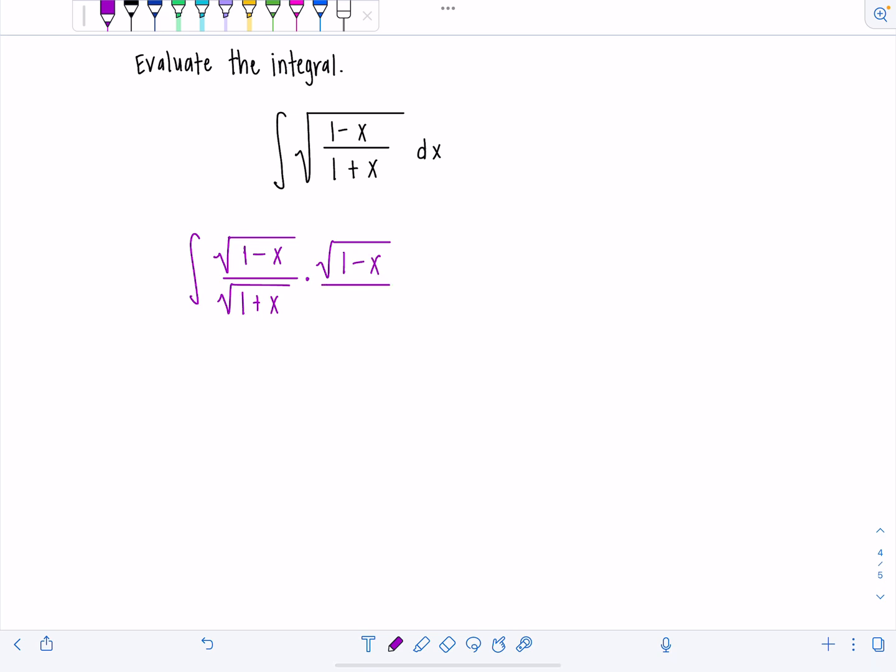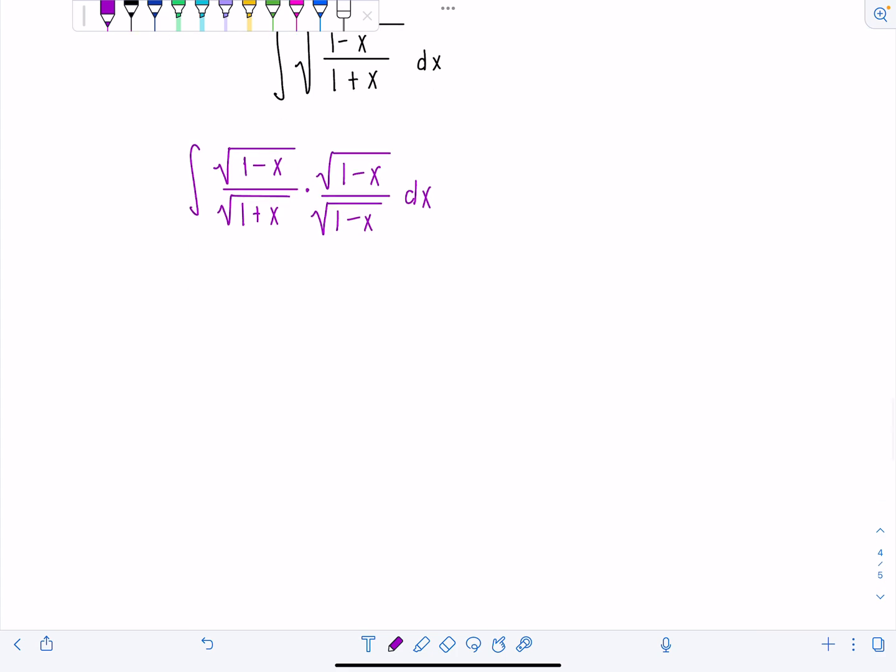Initially, I did try rationalizing the denominator, but it didn't get me anywhere. So here we go. You'll see why too. All right. So now if I have rad one minus x times rad one minus x in the numerator, I'm just going to be left with one minus x. And then in the denominator, we're going to have square root of one plus x times one minus x dx.